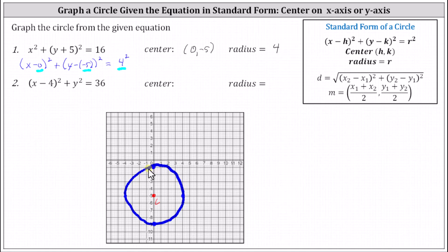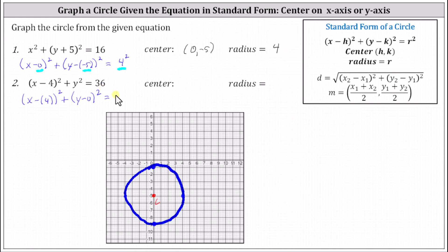Not the best circle, but I think you get the idea. For number two, we have the square of x minus four plus y squared equals 36. We can change the form to more easily identify the center and the radius. We write the square of x minus four as the square of x minus positive four, plus the square of y minus zero. On the right, 36 is a perfect square — we can write 36 as six squared. The center is the point four, comma, zero, and the radius is six.